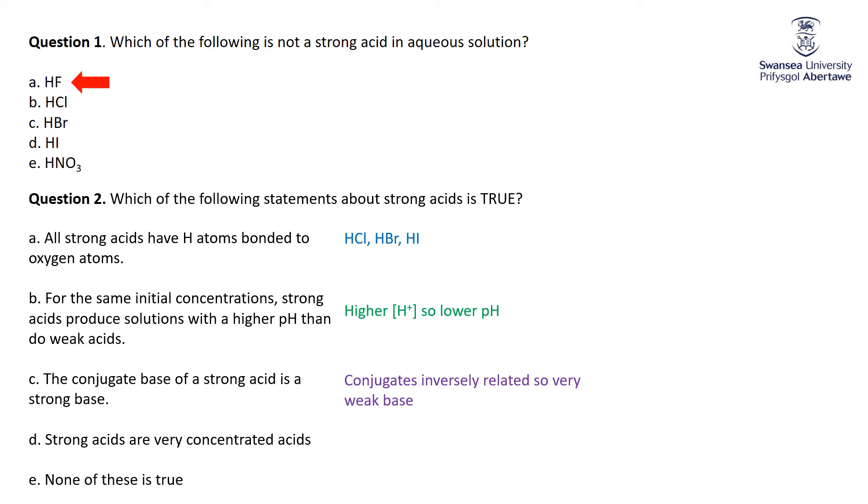Strong acids are concentrated acids. There's absolutely no relationship between strength and concentration. Concentration is how much you have dissolved. Strength is associated with the extent of dissociation. So 0.001 molar HCl is strong as we say. In other words, all four of those statements are total hogwash. So E is the correct answer here.